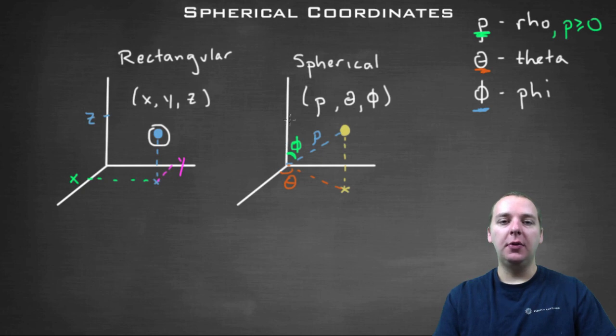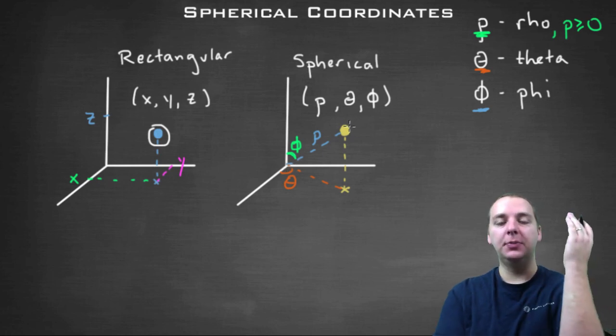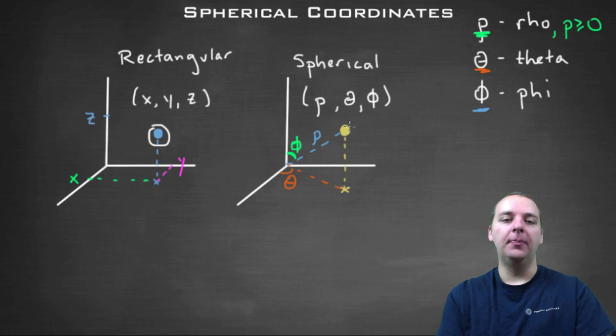The positive z axis is always straight up, so it gives a good consistent place to measure the angle from. In hindsight, it's actually a better idea to have phi measured right there.